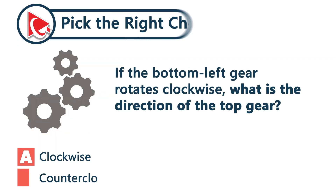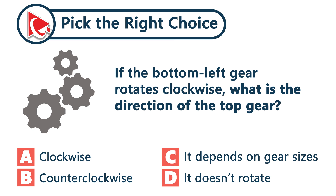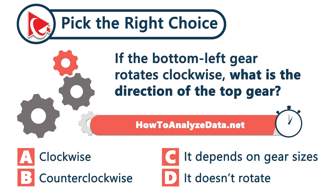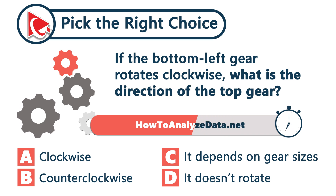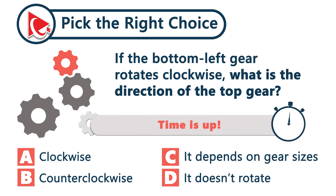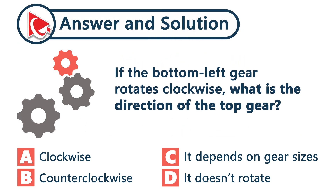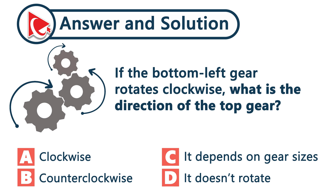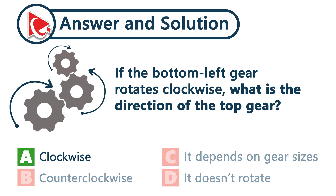Take a close look at these three connected gears. If the bottom left gear — the largest one — rotates clockwise, what is the direction of the top gear, the smallest one? Each gear flips the motion of the one before it: clockwise, counterclockwise, and clockwise again. The correct answer is choice A — clockwise.